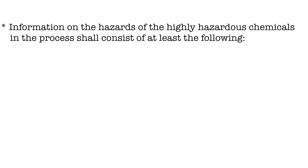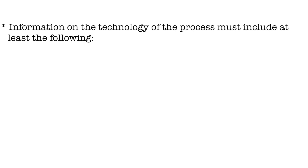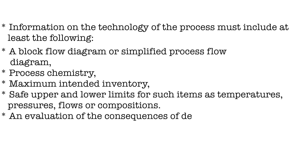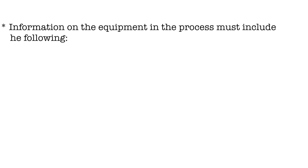Information on hazards of the highly hazardous chemicals shall consist of at least: toxicity information, permissible exposure limits, physical data, reactivity data, corrosivity data, thermal and chemical stability data, and hazardous effects of inadvertent mixing of different materials. Information on the technology for the process must include at least: a block flow diagram or process flow diagram, process chemistry, maximum intended inventory, safe upper and lower limits for temperature, pressure, flow, and composition, and evaluation of the consequences of deviations affecting the safety and health of employees.